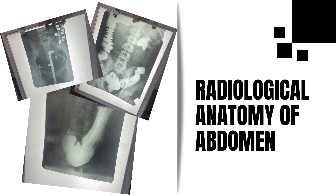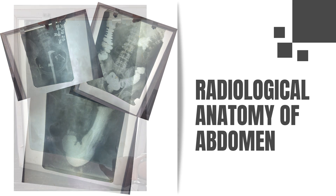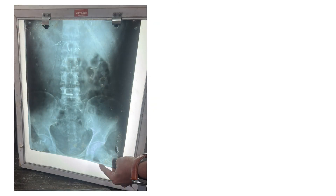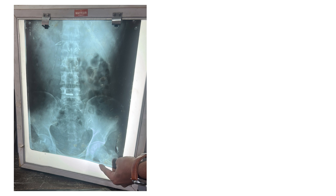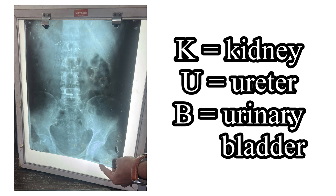Radiological anatomy of the abdomen. This is the X-ray KUB, which is also known as the plain X-ray of the abdomen, since no special dye is used for imaging. KUB stands for kidney, ureter, and urinary bladder.